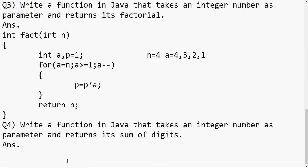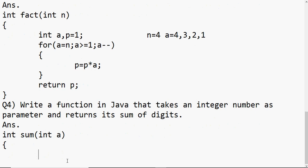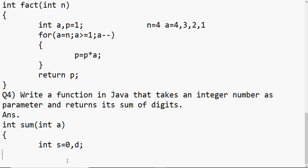For one more question: write a function in Java that takes an integer number as a parameter and returns its sum of digits. Here I have one number and I need to find the sum of its individual digits. For example, if my number is 387, the digits are 3, 8, and 7, so I have to find the sum of those. To extract digits, I'll use a loop.